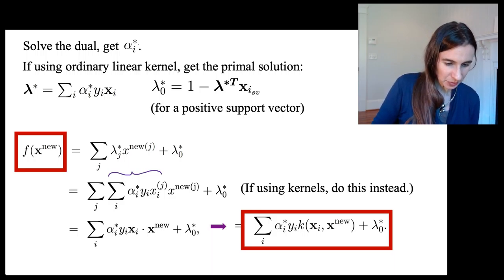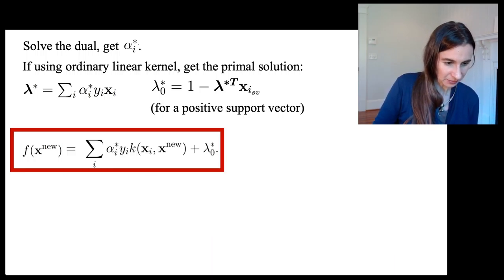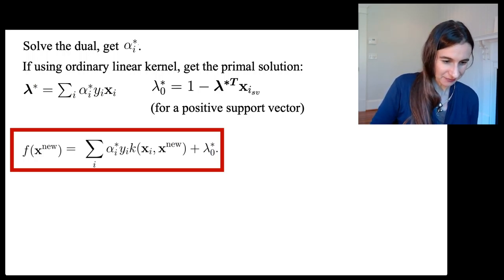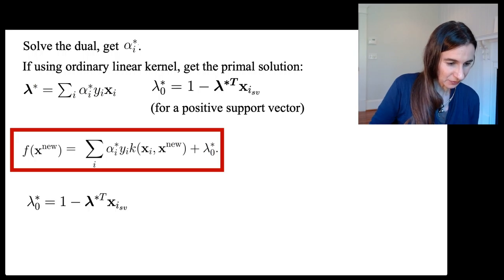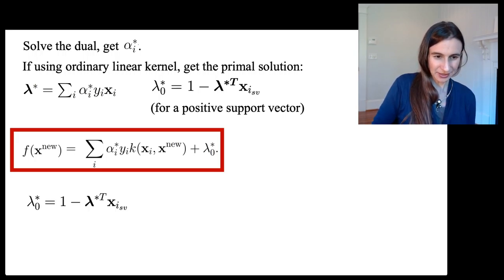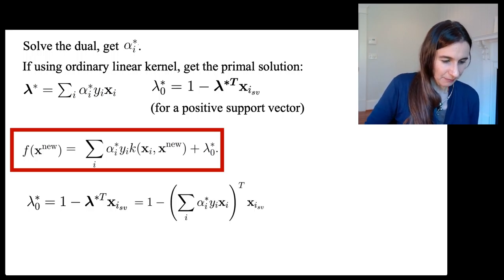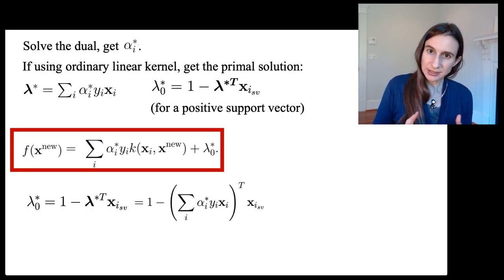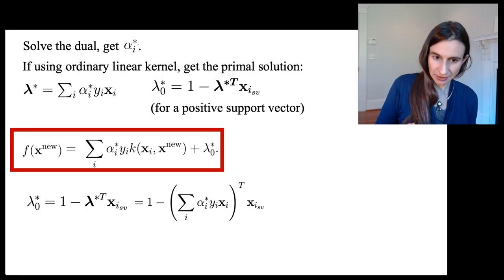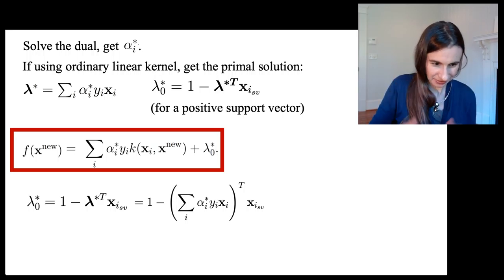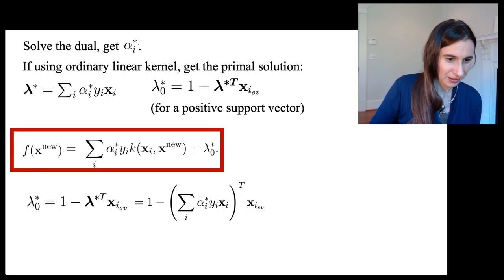Lambda_zero star—I just got this from above, I just copied it. Then I'm going to write down lambda star again in terms of the alpha_i stars, which again I just copied from above on the upper left.